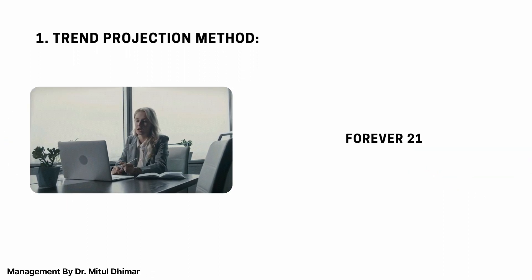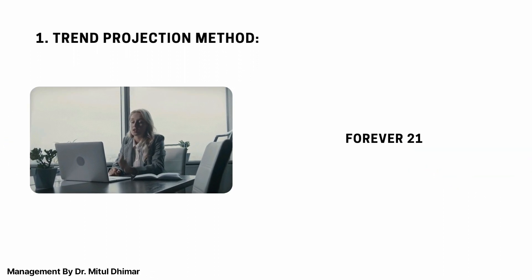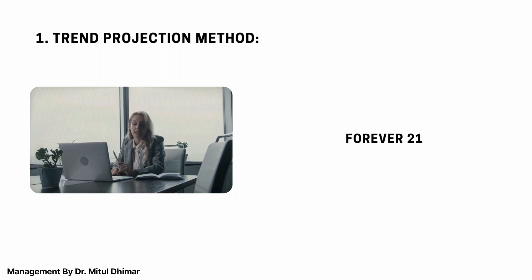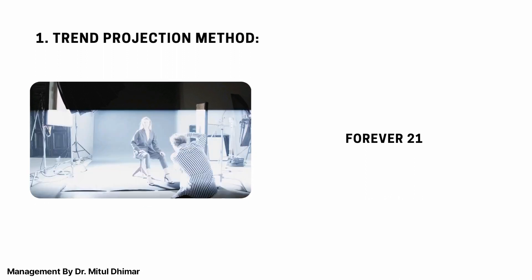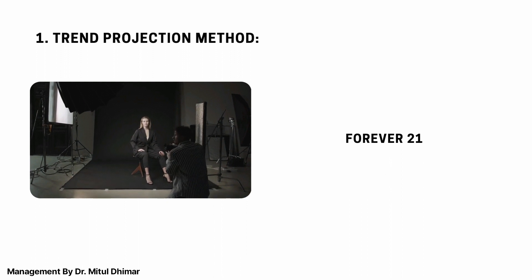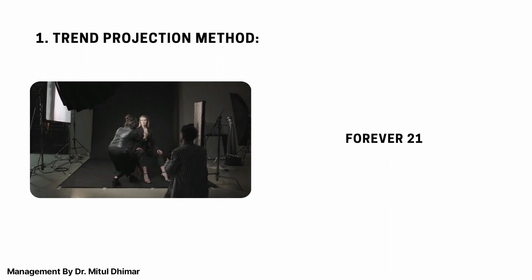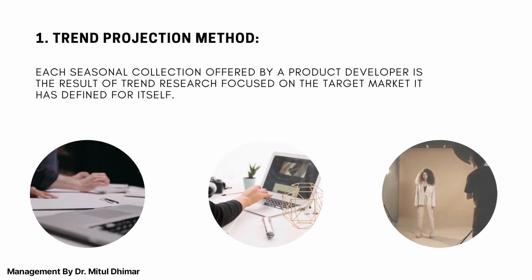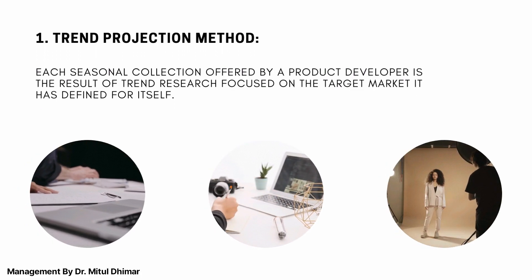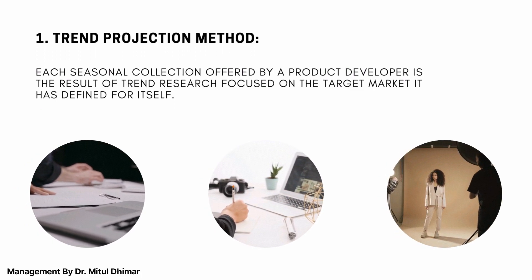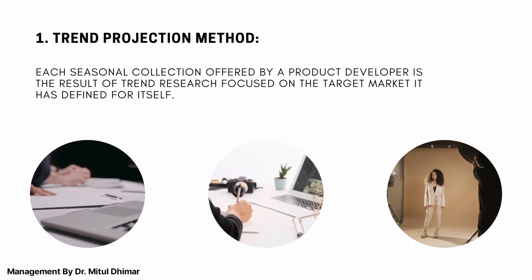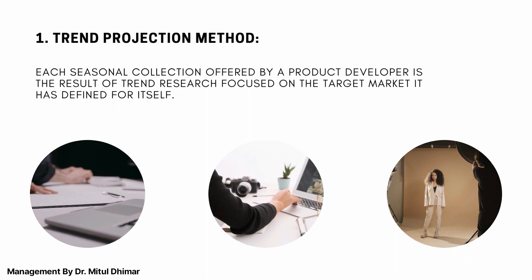For example, larger companies such as Forever 21 have their own trend departments where they follow the styles, fabrics and colours for the upcoming seasons. Each seasonal collection offered by a product developer is the result of trend research focused on the target market it has defined for itself.